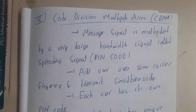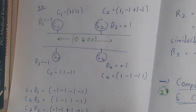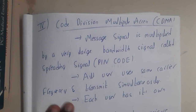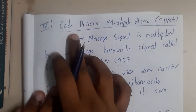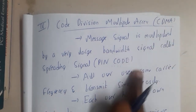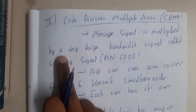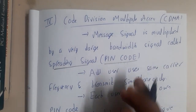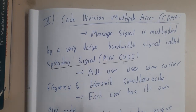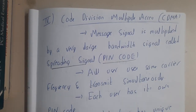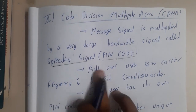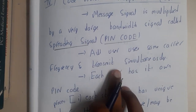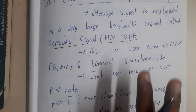Now let us continue with Code Division Multiplexing. In CDMA, we'll take an example of how multiple access is done — how data is sent without any interference. Code Division Multiple Access (CDMA) works by multiplying the message signal by a very large bandwidth signal called a spread signal or PN code. This is a kind of encoding and decoding scheme. All users use the same carrier frequency and transmit simultaneously.